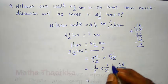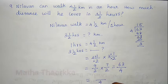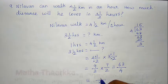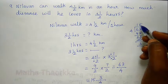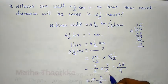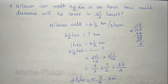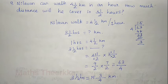The distance covered in 3 and a half hours: quotient is 15, remainder is 3, divisor is 4. So the distance is 15 and 3/4 km. This is the answer.